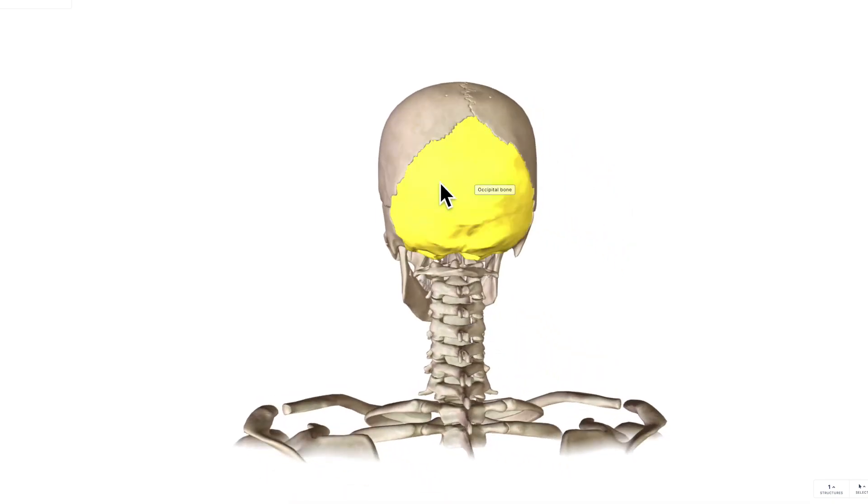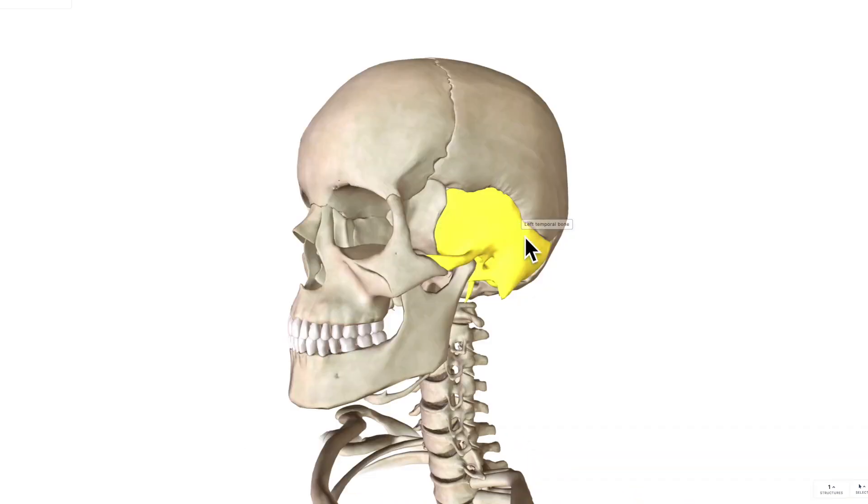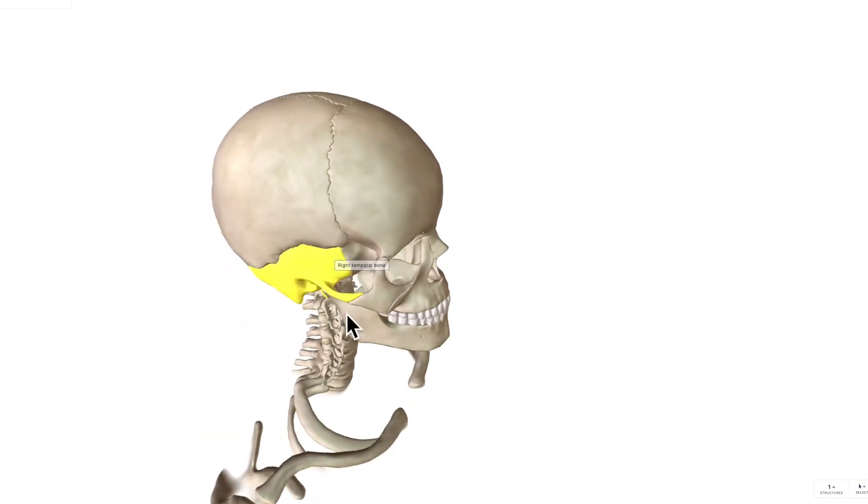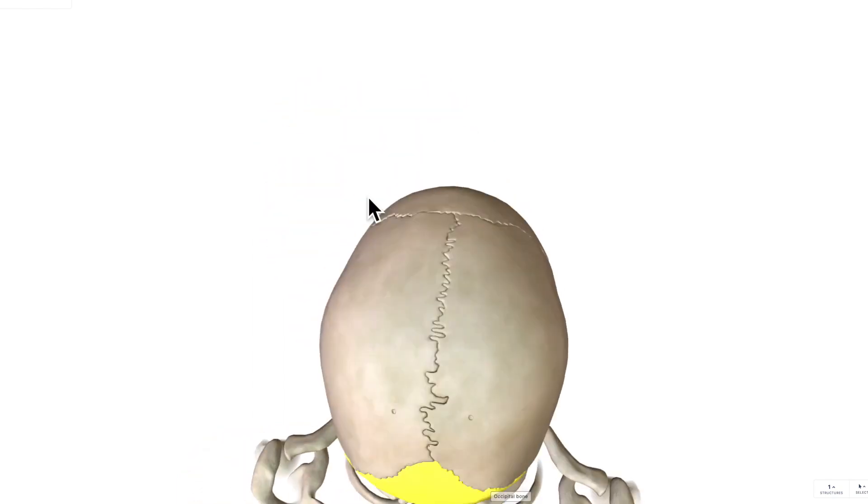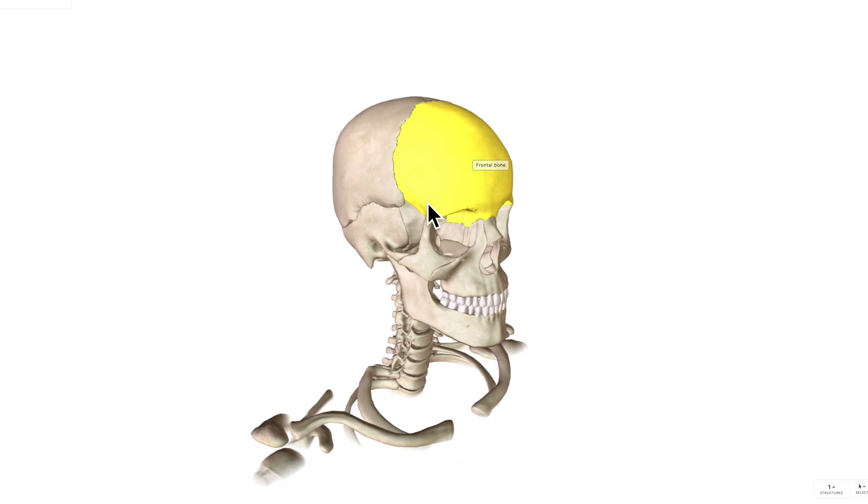So what is this bone then which is coming in this region? That's going to be your temporal bone. You've got your left and your right temporal bone. Just remember that there are two temporal bones, there's one occipital bone, there's two parietal bones, and there's one frontal bone.